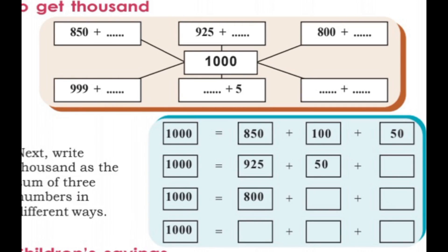We will finish all the problems, put a column, and add the numbers to make 1,000. In terms of pairs: 500 plus 500 is equal to 1,000; 400 plus 600 is equal to 1,000; 350 plus 650 is equal to 1,000. As you like, you can write two numbers that add to 1,000.